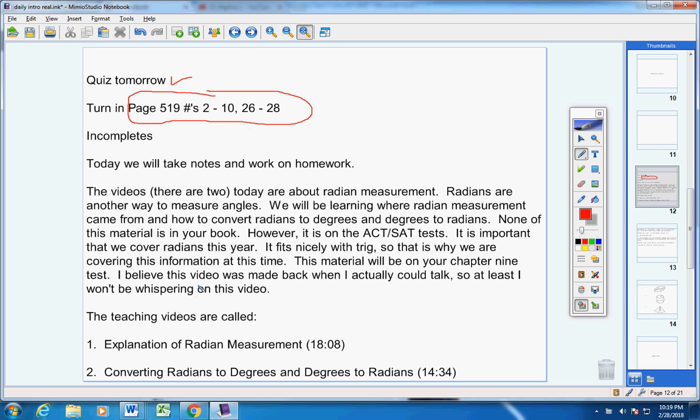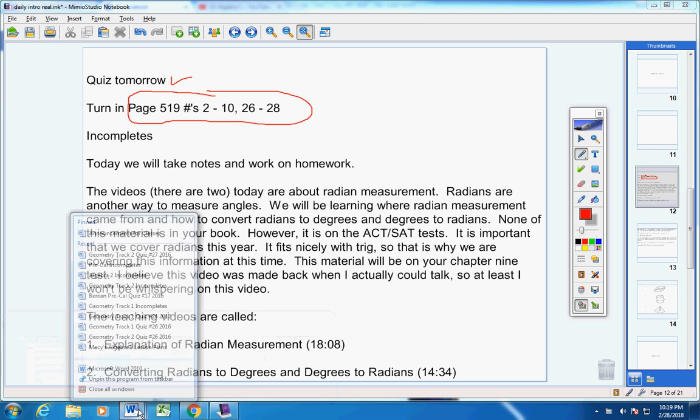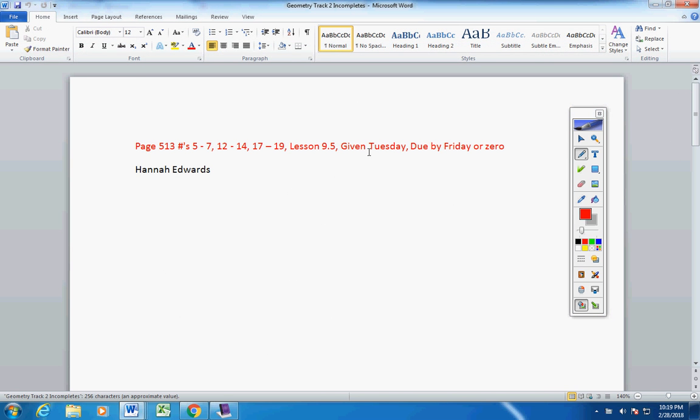By the way, Hannah, this is very unlike you, but you did not turn in Tuesday's homework. Let's see if I can find that real quick here. Okay, this was given Tuesday, it was due yesterday, you did not turn this in. So Hannah, this must be turned in by Friday. It will be a permanent zero.